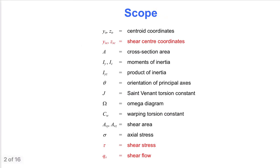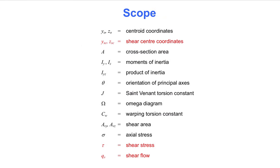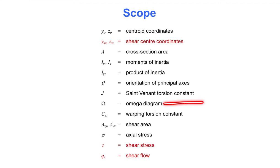There are a number of quantities that may be of interest in a cross-section analysis. Many of them are shown on this slide, but the scope in this video is more limited. Specifically, the objective is to calculate Shear Flow and Shear Stress in the cross-sections of Euler-Bernoulli beams subjected to bending. Once those quantities are determined, it is an additional objective to determine the coordinates of the so-called Shear Center in the cross-section. The video on Omega Diagrams in Warping Torsion contains an alternative approach for determining the Shear Center.